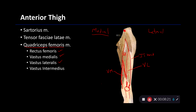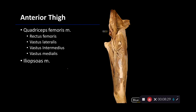Finally, we have the vastus intermedius, which is not visible in this view. But in the next view, we can see that the rectus femoris has been cut away to reveal the muscle deep to it — and that muscle is the vastus intermedius. The vastus intermedius takes its proximal attachment from the anterior lateral femur, and through the quadriceps tendon it encapsulates the patella, then continues via the patellar tendon to the tibial tuberosity. The vastus intermedius, along with the lateralis, medialis, and rectus femoris, are all extensors of the knee.